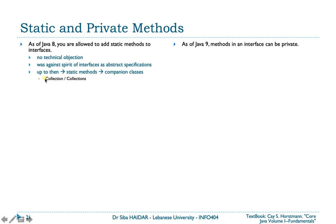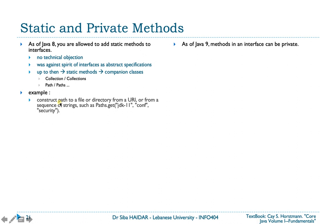For example, we had the interface Collection and its companion class Collections — which some call a utility class. This class contains all the static methods that should belong to collections. We also have Paths, and generally any class name that ends with 's' is usually a utility or companion class containing only static methods. Now, as of Java 8, you are allowed to add static methods directly to your interface.